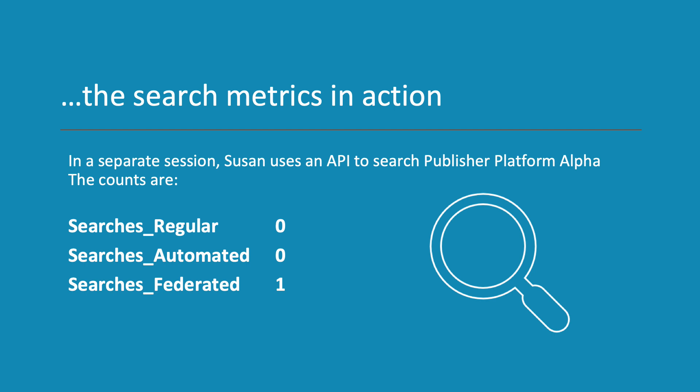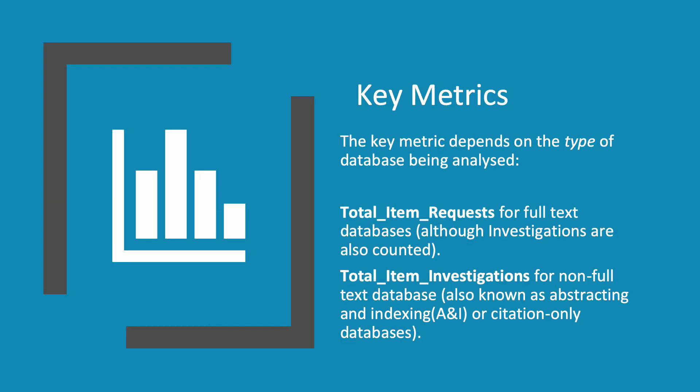If, in a separate session, Susan uses an API to search the publisher platform, the counts would be 0 for searches regular, searches automated, and searches platform, and 1 for searches federated. Key metrics depend on the type of database being analysed.